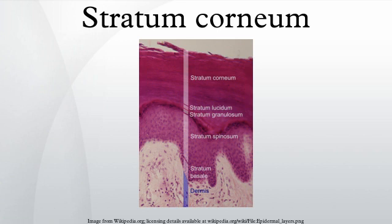Cells of the stratum corneum contain a dense network of keratin, a protein that helps keep the skin hydrated by preventing water evaporation. These cells can also absorb water, further aiding in hydration. In addition, this layer is responsible for the spring-back, or stretchy properties of skin. A weak glutinous protein bond pulls the skin back to its natural shape.